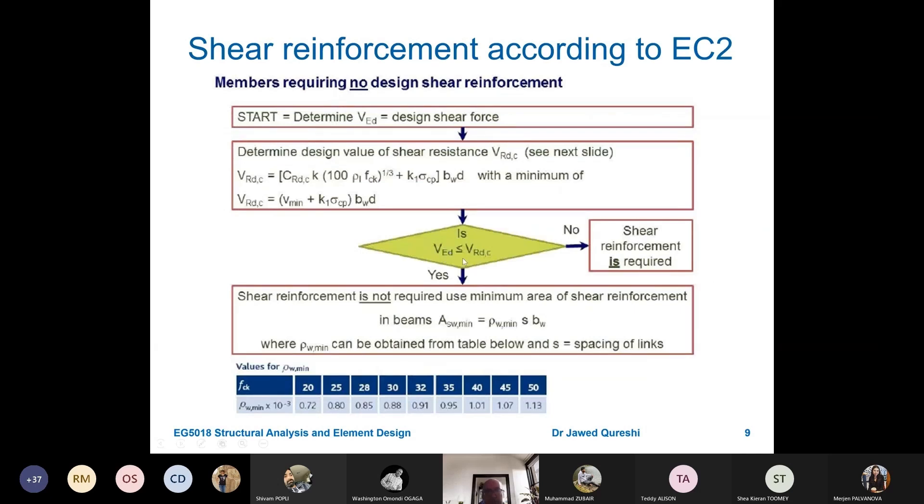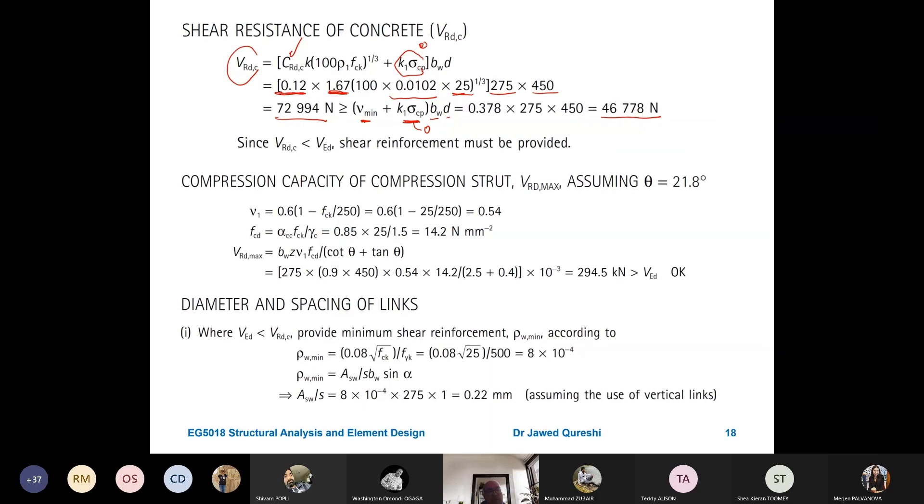Now, I have to check this. If VED is less than V RDC, then minimum reinforcement should be provided. In our case, VED is 98. V RDC is 72 point something. So, that is not less than V RDC. It means that shear must be provided. Does it make sense? Because VED is greater than V RDC or alternatively V RDC 72 is less than VED which is 98.7. So, this means that shear must be provided.